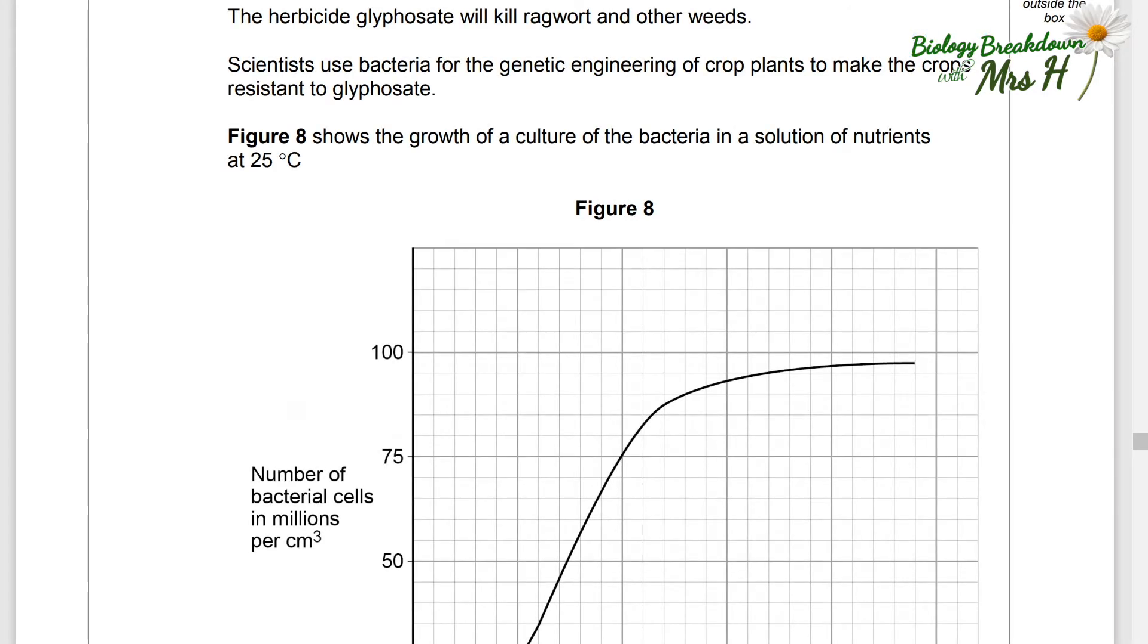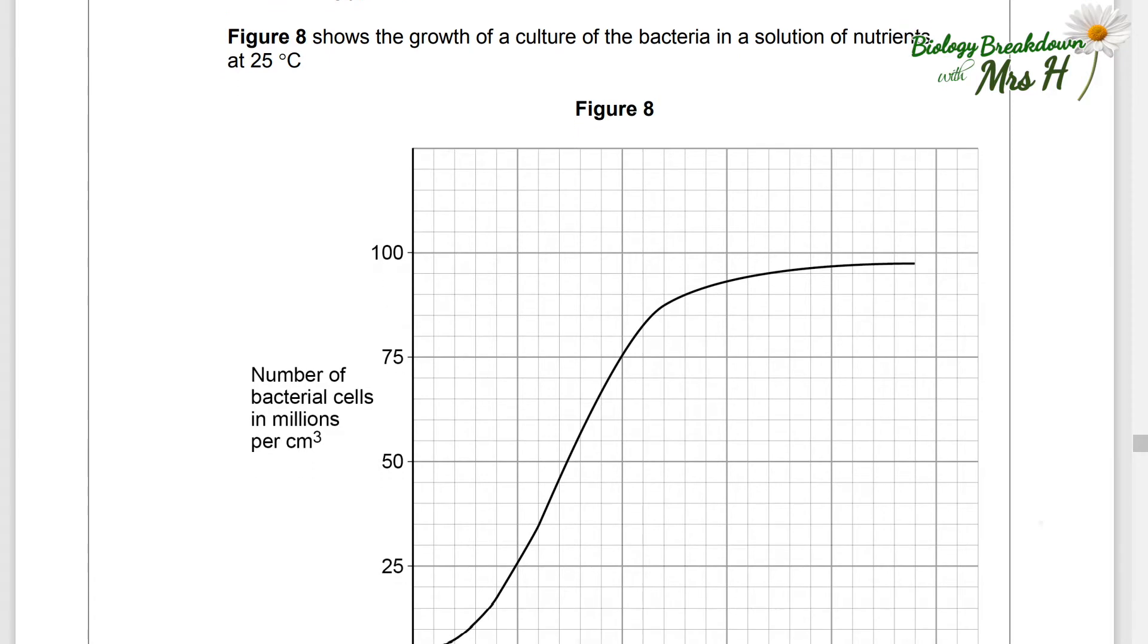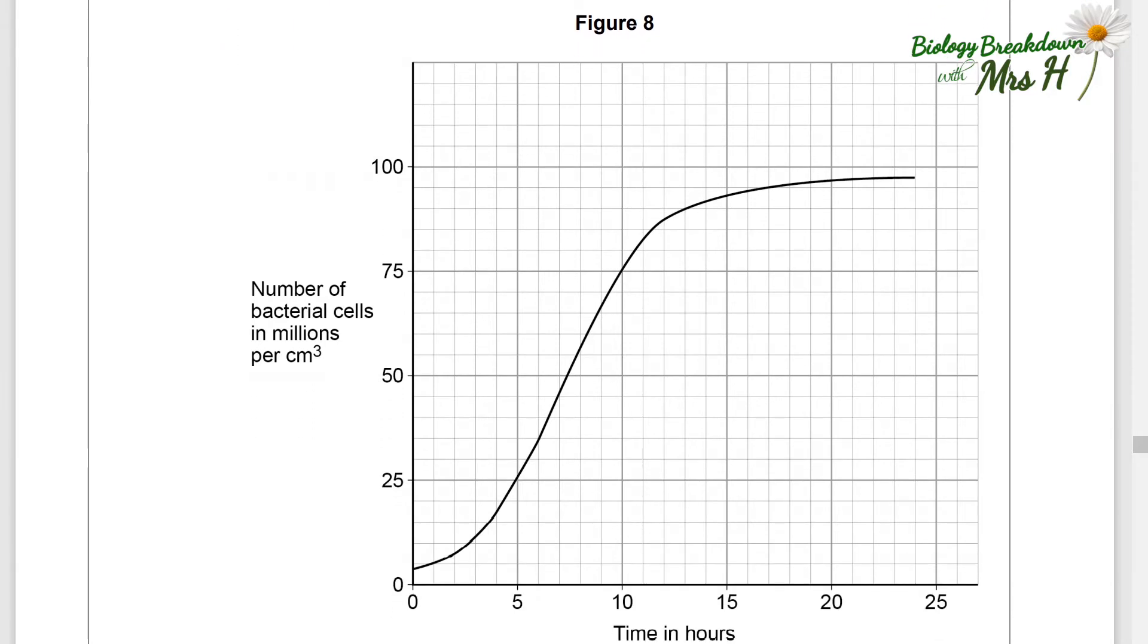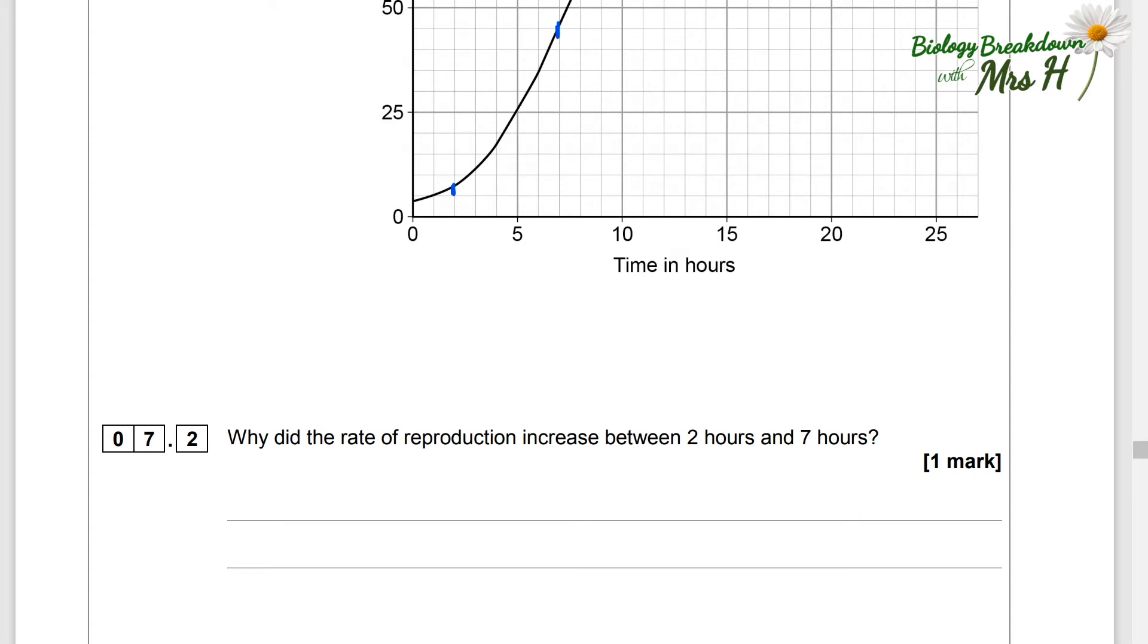The herbicide glyphosate will kill ragwort and other weeds. Scientists use bacteria for the genetic engineering of crop plants to make the crops resistant to glyphosate. Figure eight shows the graph of a culture of the bacteria in a solution of nutrients at 25 degrees C. We're looking at the number of bacterial cells in millions per centimeter cubed over 25 hours. So why did the rate of reproduction increase between two and seven hours? As you can see it's increasing all the time but what's quite nice about between two and seven hours is that we've got quite this sharp increase and this is what they want you to comment on. So it's the idea that the number of bacteria are increasing so there will be more divisions per minute.